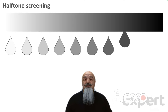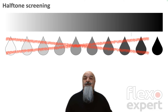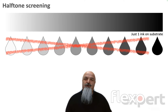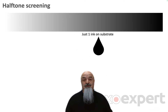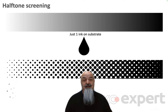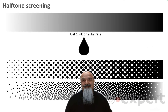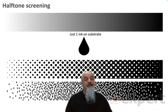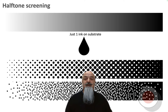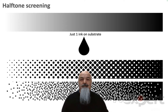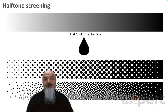Halftone screening refers, in printing, to the need of reproducing a continuous tone with one ink on one substrate. We don't have hundreds of different inks with different shades — we just have one ink, and we exploit the resolving power of human vision to create the effect of a transition of tones by dividing the ink layer into small objects: the dots of halftone screening.